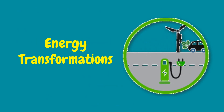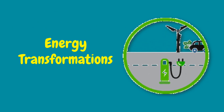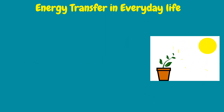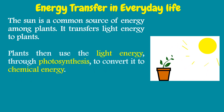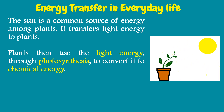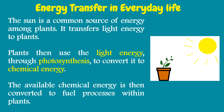Since energy cannot be created nor destroyed, how do energy transformations take place? Energy transfer in everyday life: the sun is a common source of energy among plants. It transfers light energy to plants, which then use it through photosynthesis to convert it to chemical energy. The available chemical energy is then converted to fuel processes within the plants.